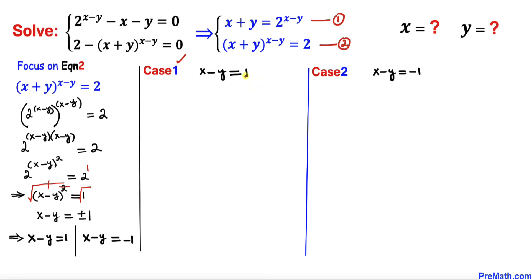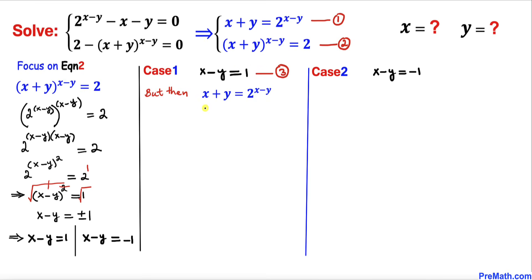Let me call x − y = 1 as equation number three. From equation one we have x + y = 2^(x−y). Wherever we see x − y, I am going to replace it by 1. So this equation becomes x + y = 2^1, or simply x + y = 2. Let me call this equation number four.